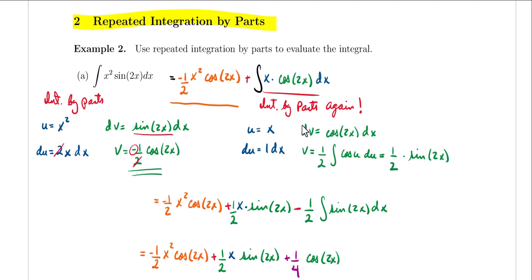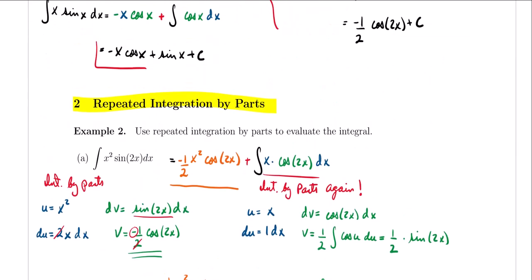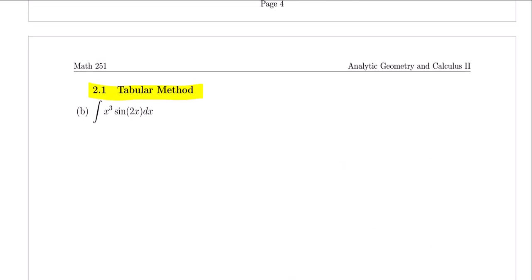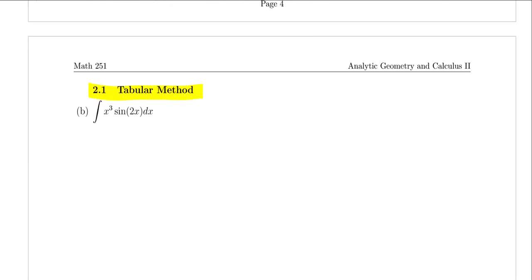I'm going to show you another approach that can help remedy the convoluted steps of repeated integration by parts. Let's look at another example using this different, much quicker approach known as the tabular method. We'll use the integral of x cubed times sine of 2x. This problem is similar to the previous one but with x cubed, meaning we'd need integration by parts one additional time.